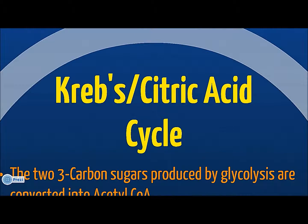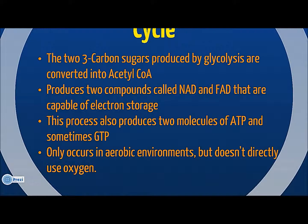The citric acid cycle is a continuation of the glycolysis cycle. The two sugars from the glycolysis cycle are converted to a slightly different compound called acetyl-CoA. The cycle also produces compounds with electron storage capability, such as NAD and FAD, as well as energy in the form of ATP and occasionally GTP. Although the cycle itself does not use oxygen directly, oxygen must be present for the process to work.